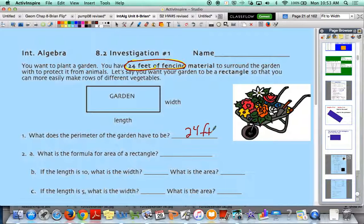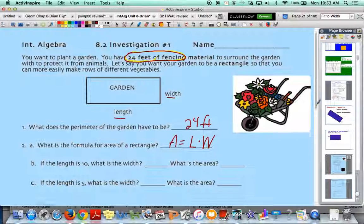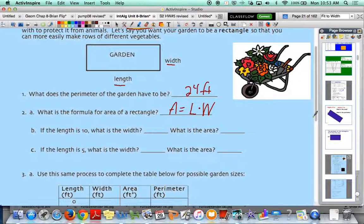What is the formula for area of a rectangle? We talked about that is length times width, or you can think of it as base times height. In this case, though, we're referring to it as the length and the width. So length times width gets us the area on the inside. Okay, so if the length is 10, what is the width, and what is the area?